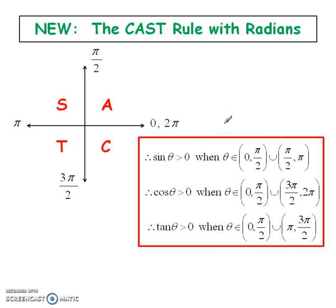So the cast rule doesn't change when we're talking about radians. It's just written in radians instead. So instead of the 0, 90, 180, 270, and 360, I've changed them all to the radians already. And I'll just tell you what this one says right here. Sine is greater than 0 or positive right in this quadrant and this quadrant. So what they're saying is when theta is from 0 to pi over 2. And sine is also positive from pi over 2 to pi. Notice that they have the round brackets because sine is not positive when it lands exactly on each of these lines. So it's just written instead in radians in this slide.